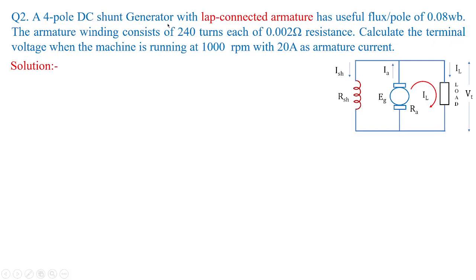Next, a four-pole DC shunt generator with lap-connected armature has useful flux per pole of 0.08 webers. The armature winding consists of 240 turns, each of 0.002 ohms resistance. Calculate the terminal voltage when the machine is running at 1000 rpm with 20 amperes as armature current. For the shunt machine, the generated voltage delivers current Ia, where Ia equals Ish plus IL. In lap connection, the number of parallel paths A equals the number of poles P, so here A = P = 4.